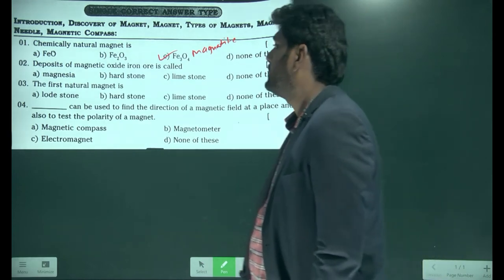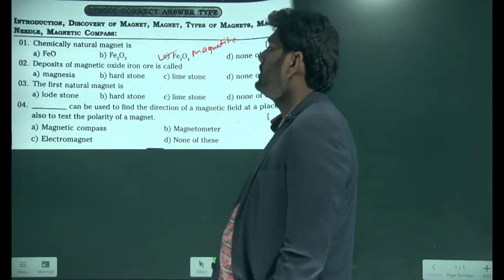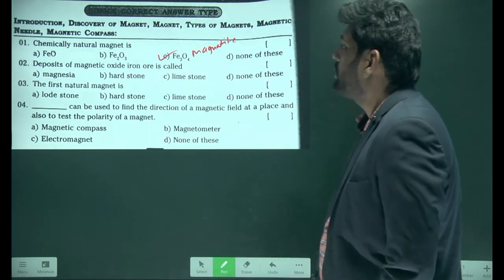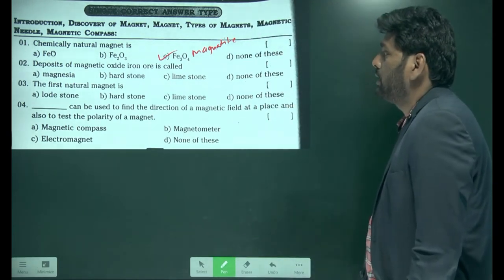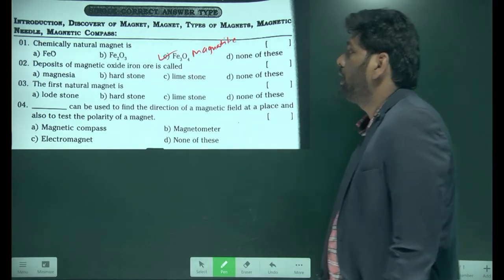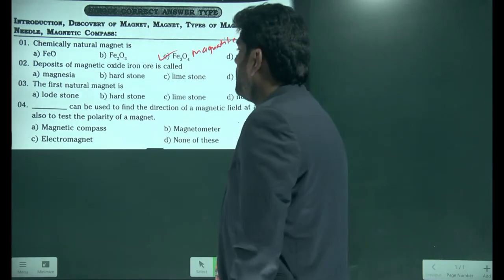Next question: deposits of magnetic oxide iron ore is called magnetite.